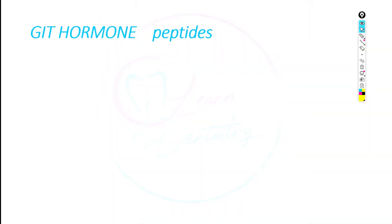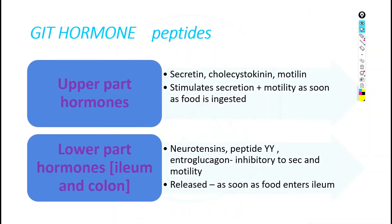Moving further to GIT hormones — these are peptides. We can categorize the hormones as upper part hormones and lower part hormones. The upper part hormones include secretin, cholecystokinin, and motilin. These three are the main hormones which stimulate secretions and motility. As soon as food is ingested, these upper part hormones start to secrete.